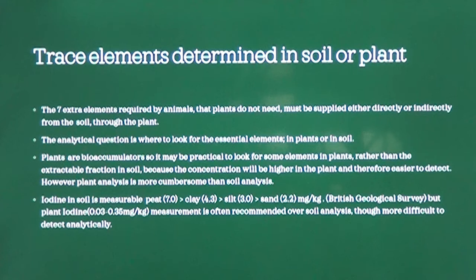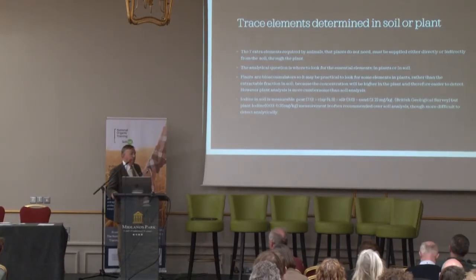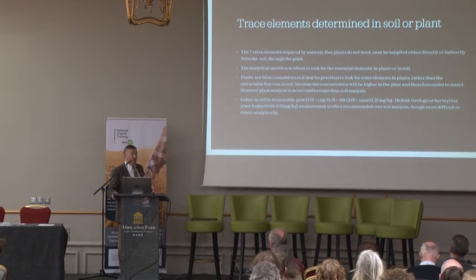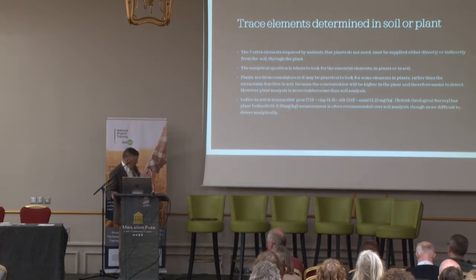The seven elements needed for animal function are mentioned, and it's generally assumed — maybe erroneously — that the content of a plant is going to be digested and absorbed completely by the animal.